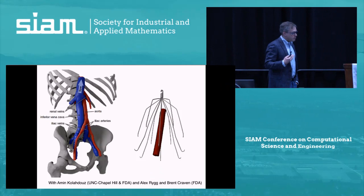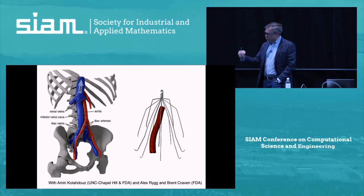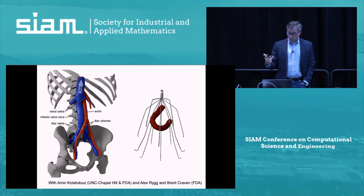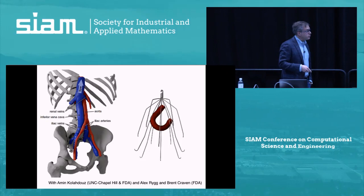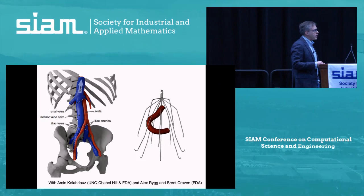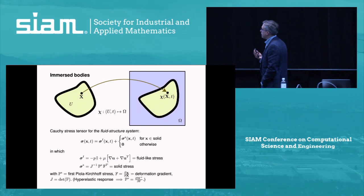The application we're really targeting is modeling inferior vena cava filters. Patients with deep vein thrombosis — large blood clots in the legs — are at risk of developing pulmonary embolism: a clot can travel up the inferior vena cava and lodge in the lungs, which can be a fatal event. Many patients can be managed using anticoagulants, but some can't, and those patients receive inferior vena cava filters. These have proved quite difficult to study in large-scale clinical trials, so we aim to develop models that help understand when they work and when they don't.